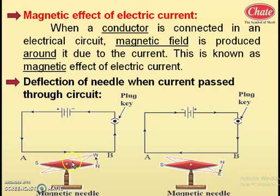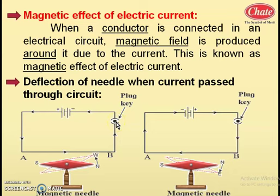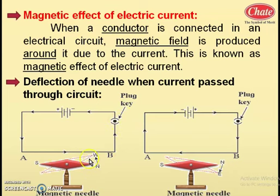The deflection of the magnet is shown by the dotted line. As the magnetic needle deflects, this shows that there must be an existence of a magnetic field. If we trial repeatedly by removing and inserting the key, we observe the magnetic needle deflect. When the plug key is removed, the magnetic needle returns to its original position. When you insert the plug key, the magnetic needle deflects again.